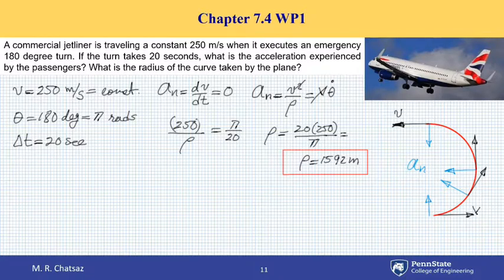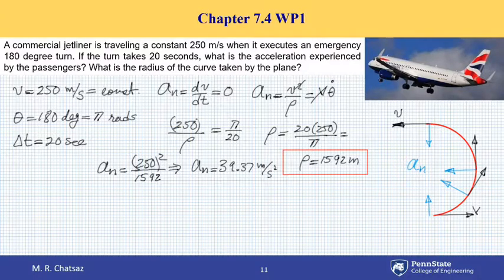But as far as normal component of acceleration, acceleration experienced by the passengers is concerned, A-N equals to V squared over rho or 250 squared over 1592. I'm using primary units in metric system. Therefore, my answer will be in meters per second squared. A-N turns out to be 39.37 meters per second squared.